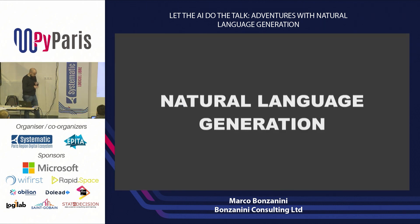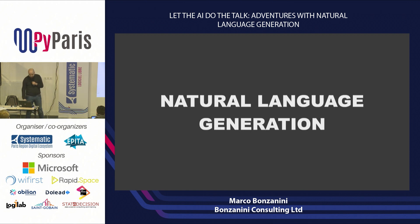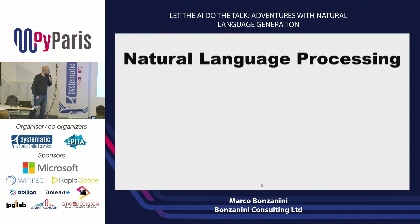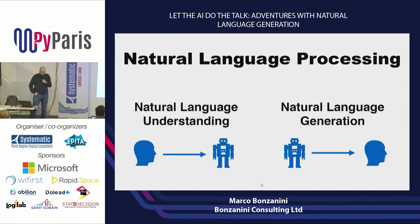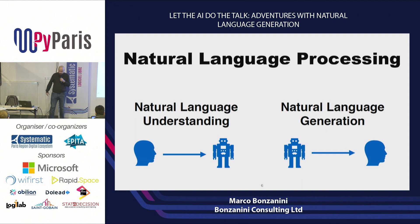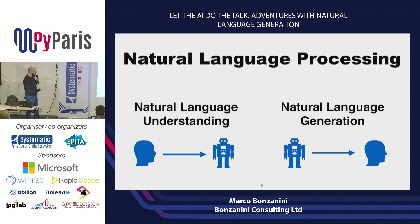On to the topic of this presentation: natural language generation. Just to put things in context, looking at the bigger picture, we usually talk about natural language processing as a broader topic. In natural language processing, we have two main pillars: natural language understanding on one side and natural language generation on the other side. We're going from human language to some machine representation — that's understanding — and then from that machine representation back to human. We often use acronyms: NLP, NLG, NLU. The topic here is NLG, but we can also talk about NLP in general.